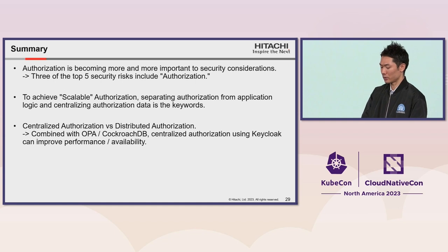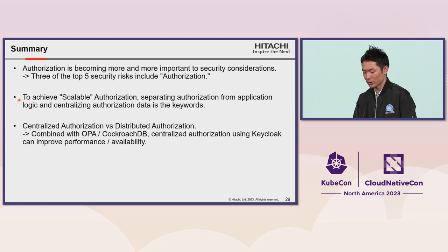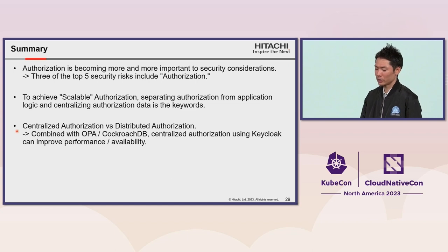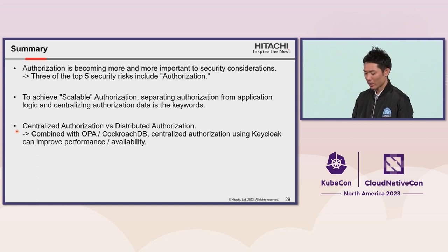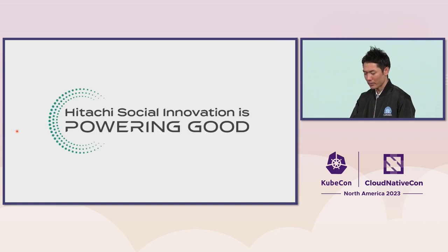Finally, this is a summary of this session. First, authorization is becoming more and more important as a security consideration, as shown by OWASP's Top 10 API Security Risks where three of the top five include authorization. Second, to achieve scalable authorization, separating authorization from application logic and centralizing authorization data are the keywords, and I introduced how to achieve this with Keycloak. Finally, I described the disadvantages of centralized authorization compared to distributed authorization, how Keycloak can reduce these disadvantages, and how combined with OPA we can solve the performance challenge and combined with CockroachDB we can solve the availability challenge.